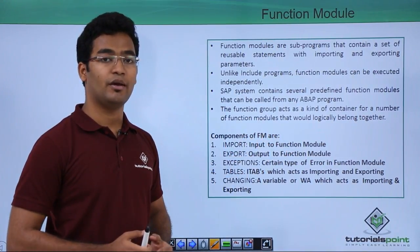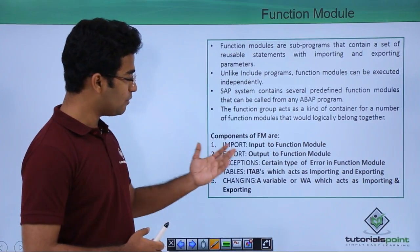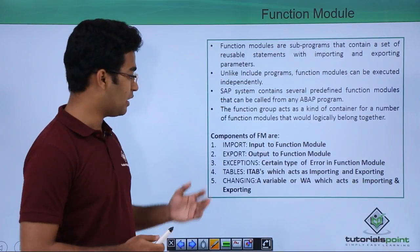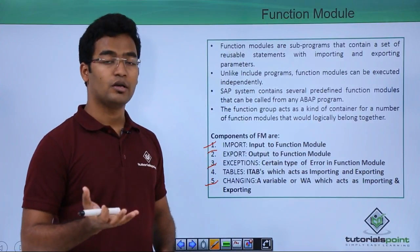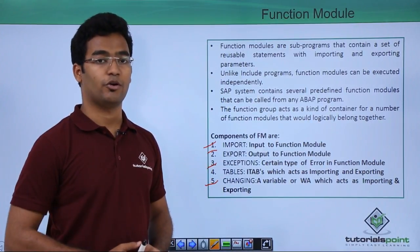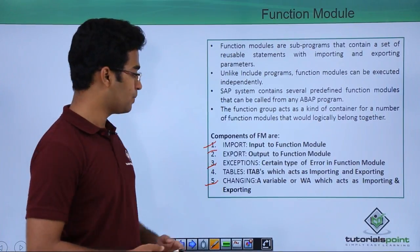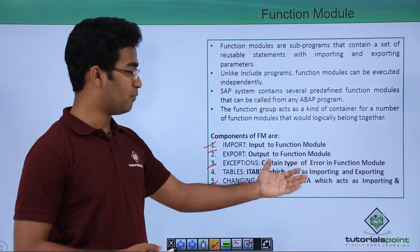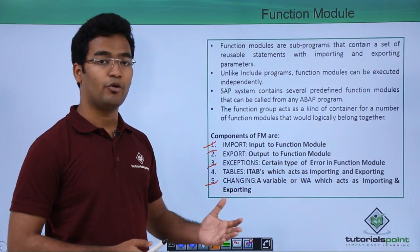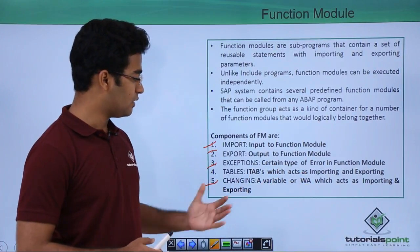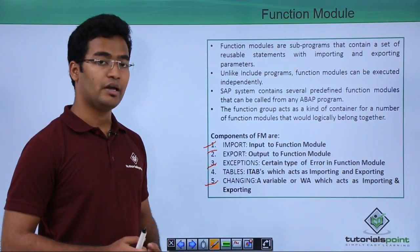In this example, we will be making use of one predefined function module, that is SPELL_AMOUNT. There are some components of function modules: import, export, exceptions, tables, and changing. Import is used to get the input to the function module. Export is like an output from the function module. Exceptions are errors we can handle. Internal tables are provided as importing or exporting parameters, and changing is a variable or work area that acts as both an importing and exporting parameter.